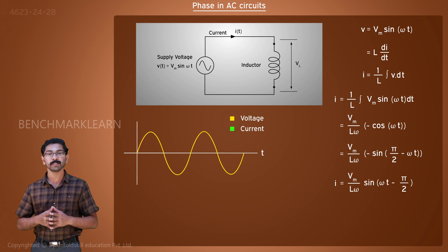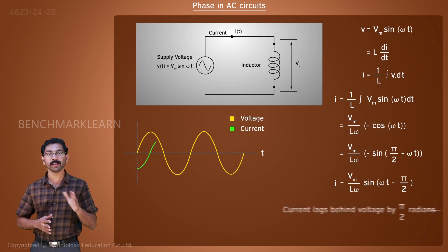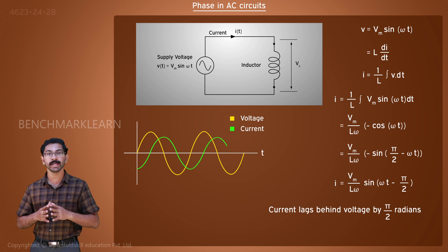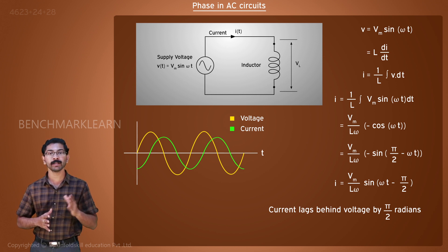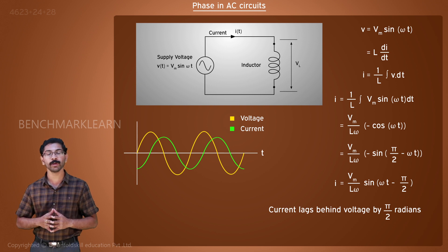This means that in the case of an inductive load, the current will lag behind the voltage by pi by 2 radians. If we plot the voltage across and current through an inductor on the same graph, we can see that.